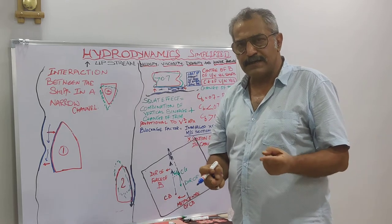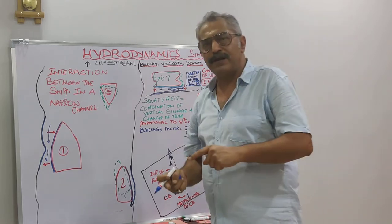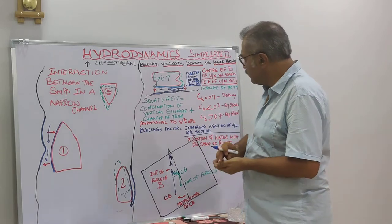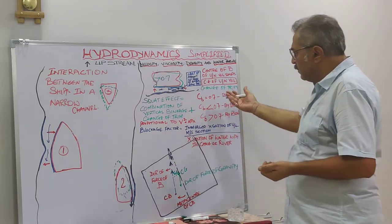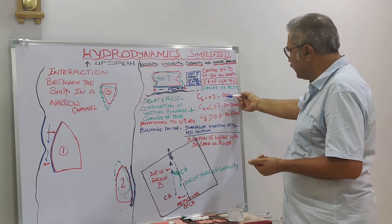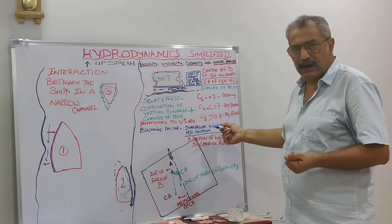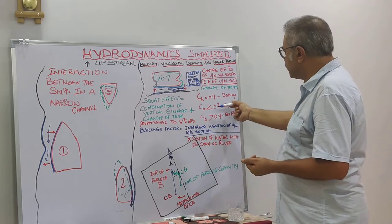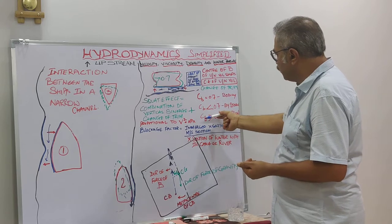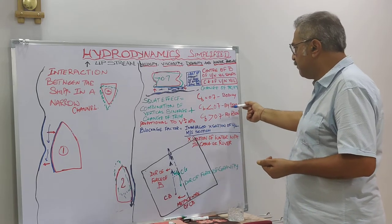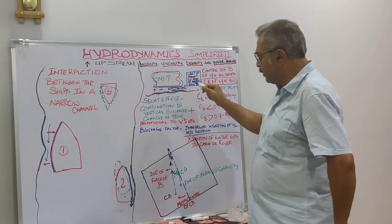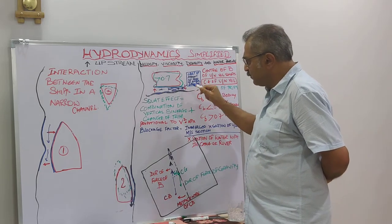To confirm: center of buoyancy is the center of gravity of the underwater volume of displacement. As discussed in the previous lecture, if the block coefficient is 0.7, she will sink bodily; if the block coefficient is less than 0.7, she will go by stern; and if the block coefficient is more than 0.7, she will squat by head.